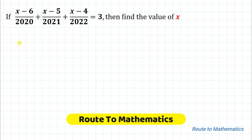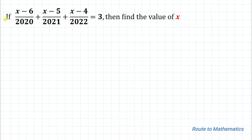Hello everyone, welcome to Root 2 Mathematics. In this video we're going to solve an interesting question. The given question is: if (x minus 6) divided by 2022, plus (x minus 5) divided by 2021, plus (x minus 4) divided by 2022, equals 3, then find the value of x.